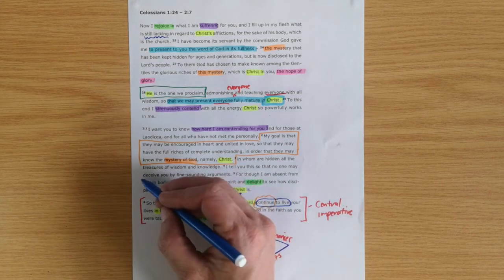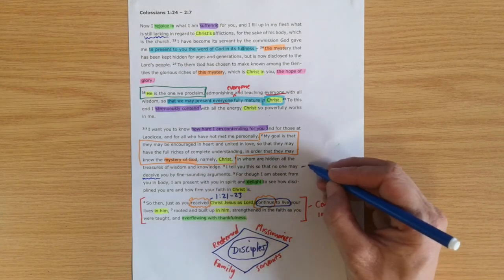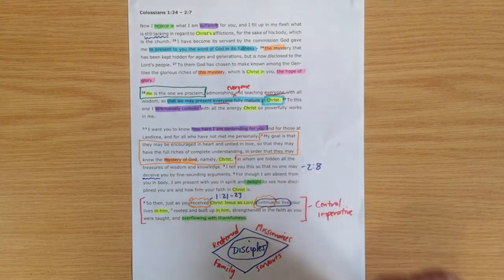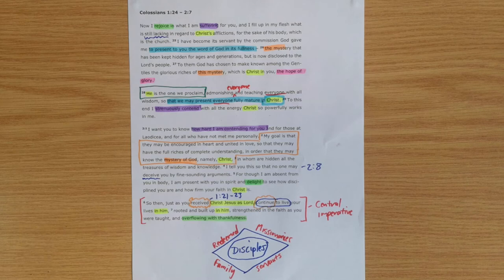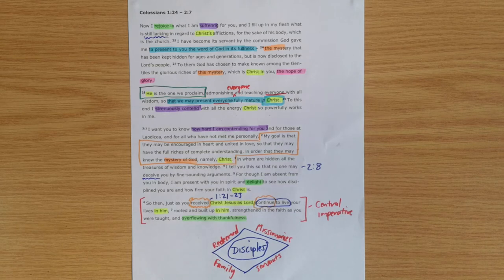Now, the reason he is pushing this point is we can see it hinted at in verse 4: 'I tell you this so that no one may deceive you.' Then if you look at chapter 2, verse 8, the very next verse, Paul says, 'See to it that no one takes you captive through hollow and deceptive philosophy, which depends on human tradition and the elemental spiritual forces of this world rather than on Christ.'